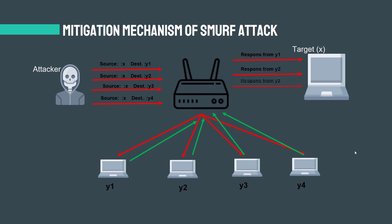You can see that a lot of responses go to target X. The target victim then receives a lot of ICMP echo reply packets, potentially becoming overwhelmed and resulting in denial of service to legitimate traffic.